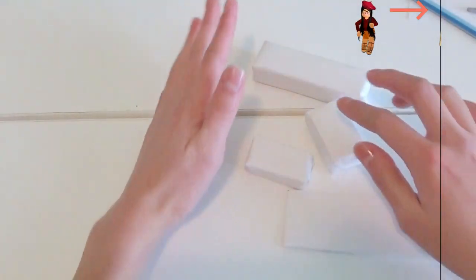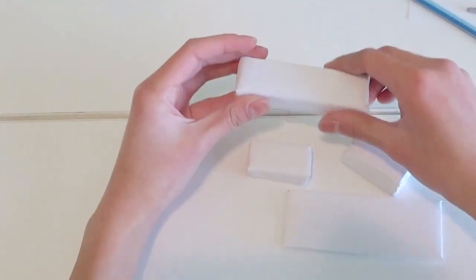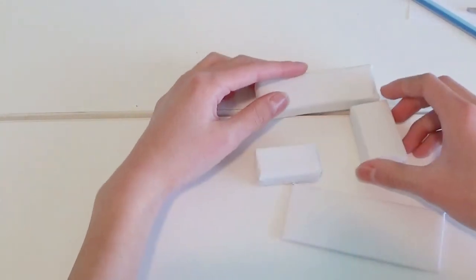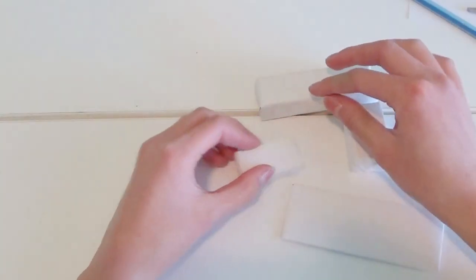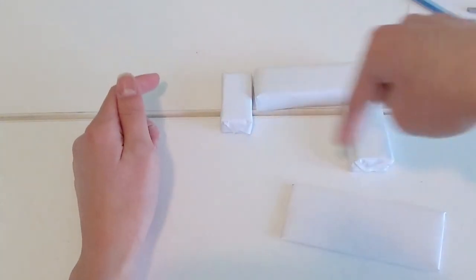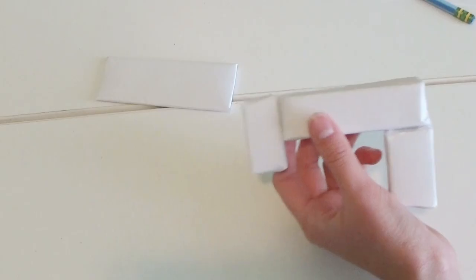All right, so now we are finally going to assemble our sewing machine. So grab this long part and this like short, wider piece and put it right there. And then this really, the smallest piece is going to go right there. And we're going to glue all of these together using hot glue.